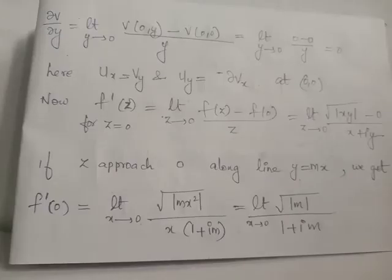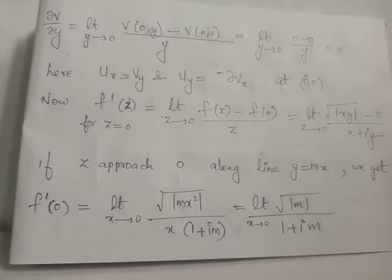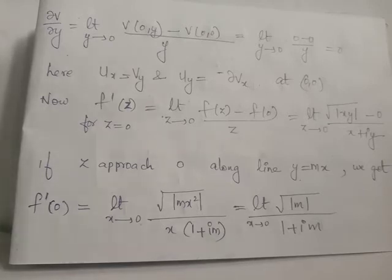Similarly, ∂v/∂y = limit as y tends to 0 of [v(0,y) minus v(0,0)] divided by y, keeping x constant at x = 0. Since v = 0 everywhere, ∂v/∂y is also 0. All four partial derivatives equal 0, so the CR equations are satisfied at the origin, but this does not mean the function is analytic.